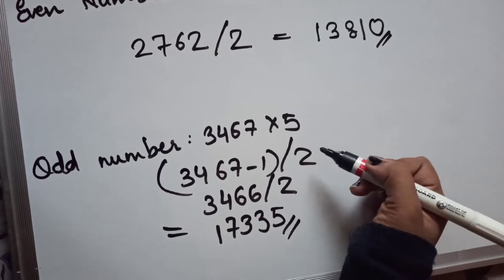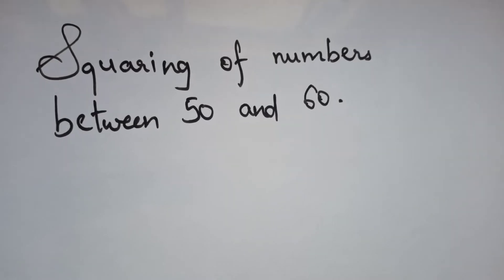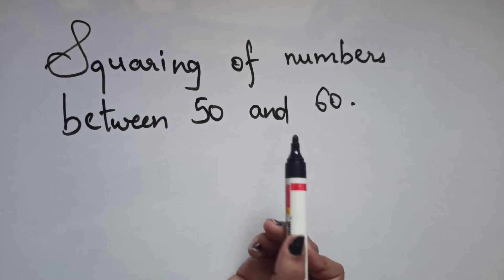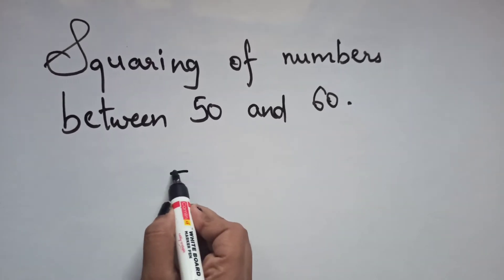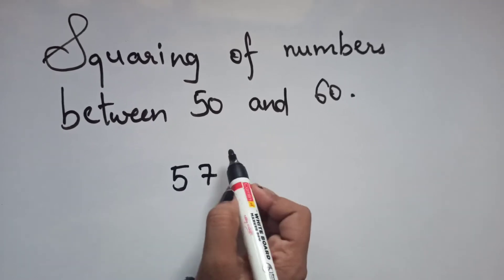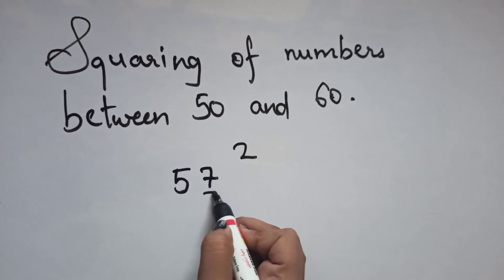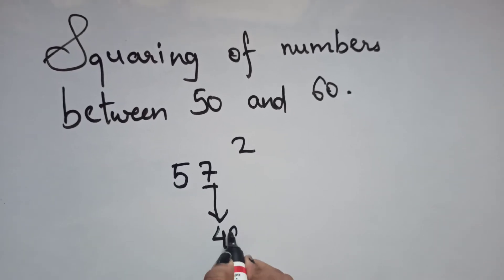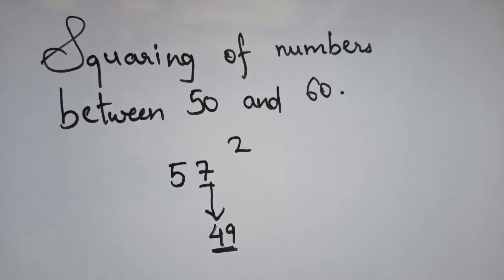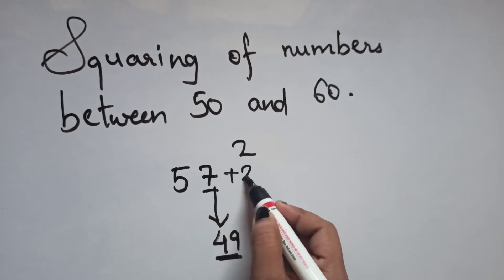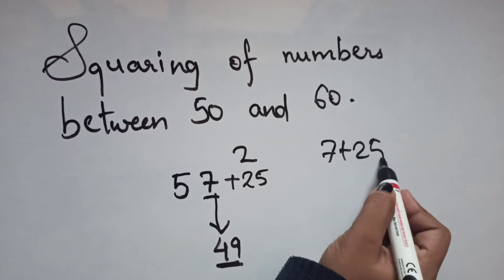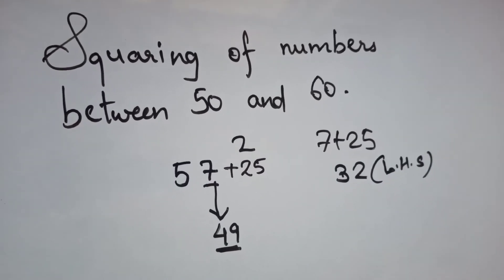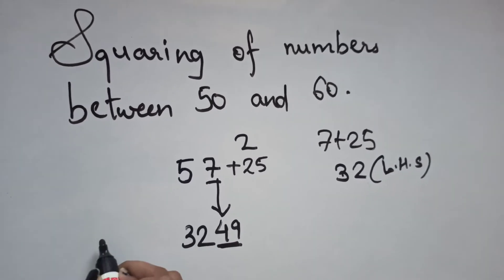The fourth trick is squaring numbers between 50 and 60. Take the number 57. First, square the unit digit: 7² = 49 — this is the right-hand side of the answer. Then add 25 to the unit digit: 7 + 25 = 32 — this is the left-hand side.